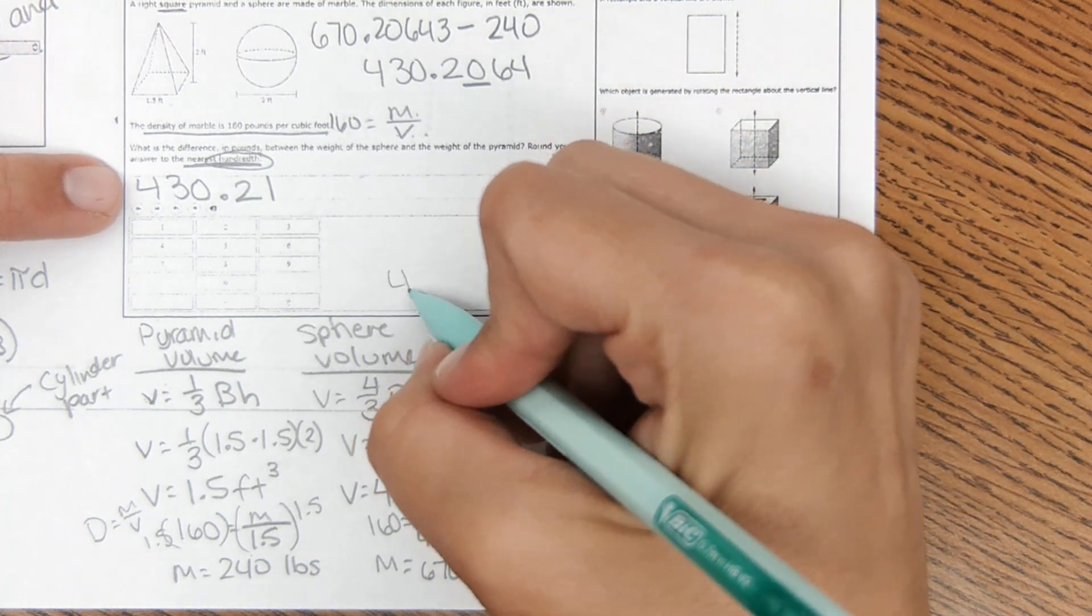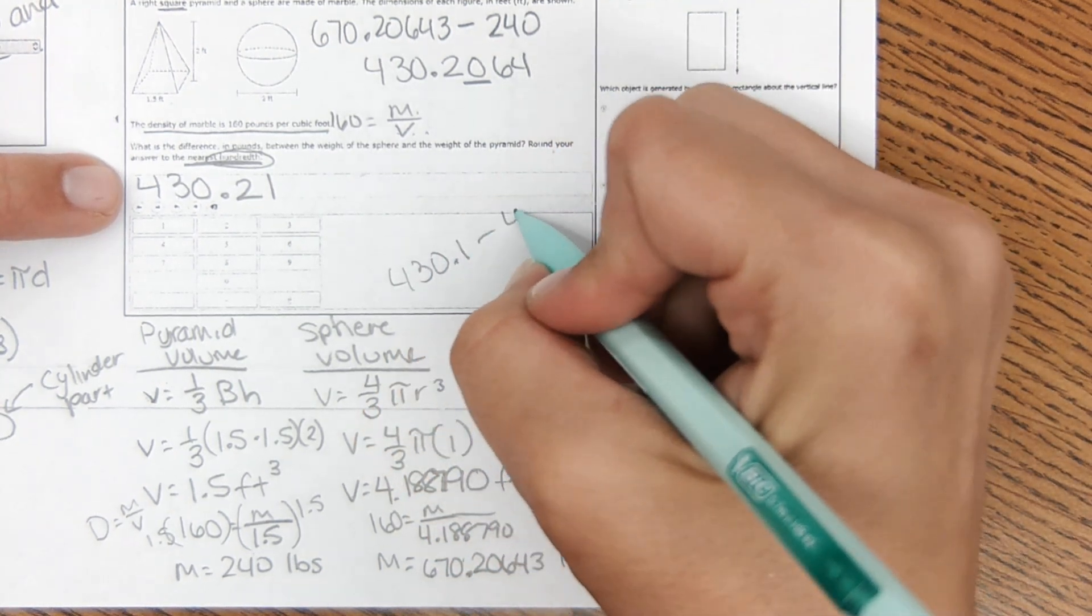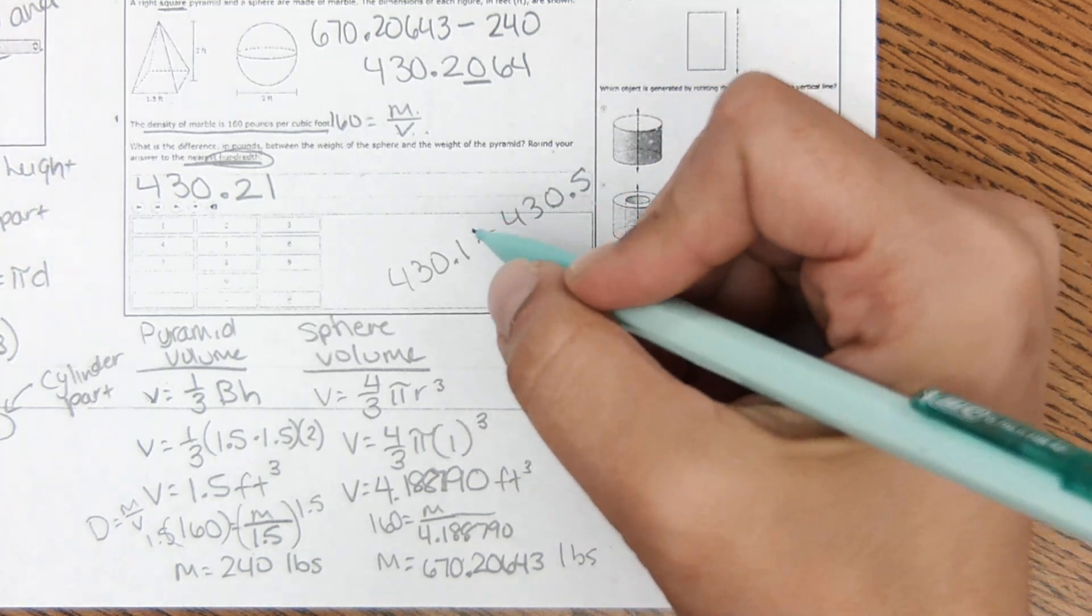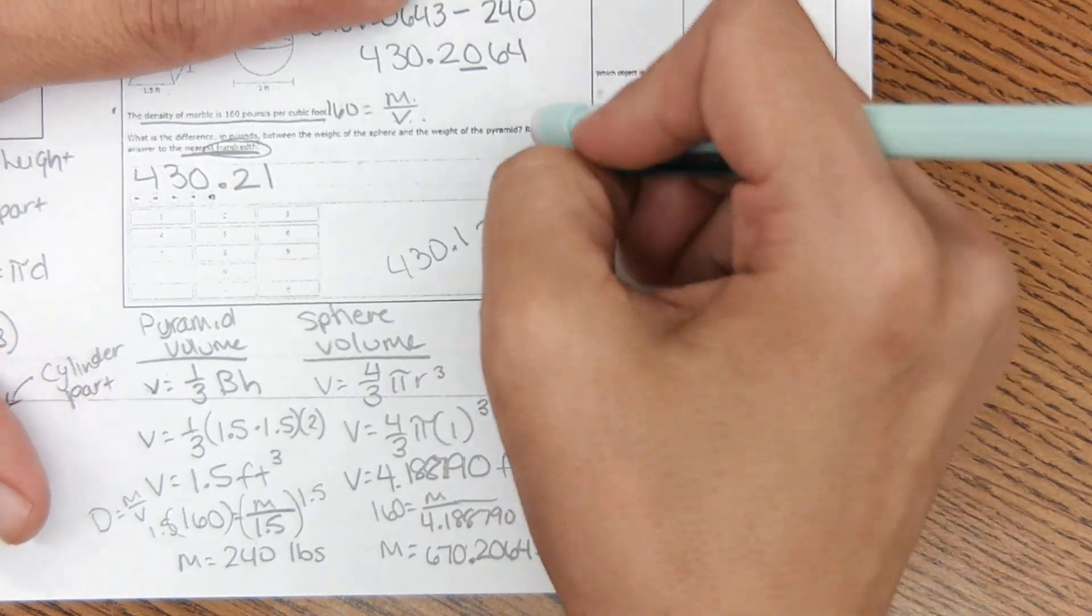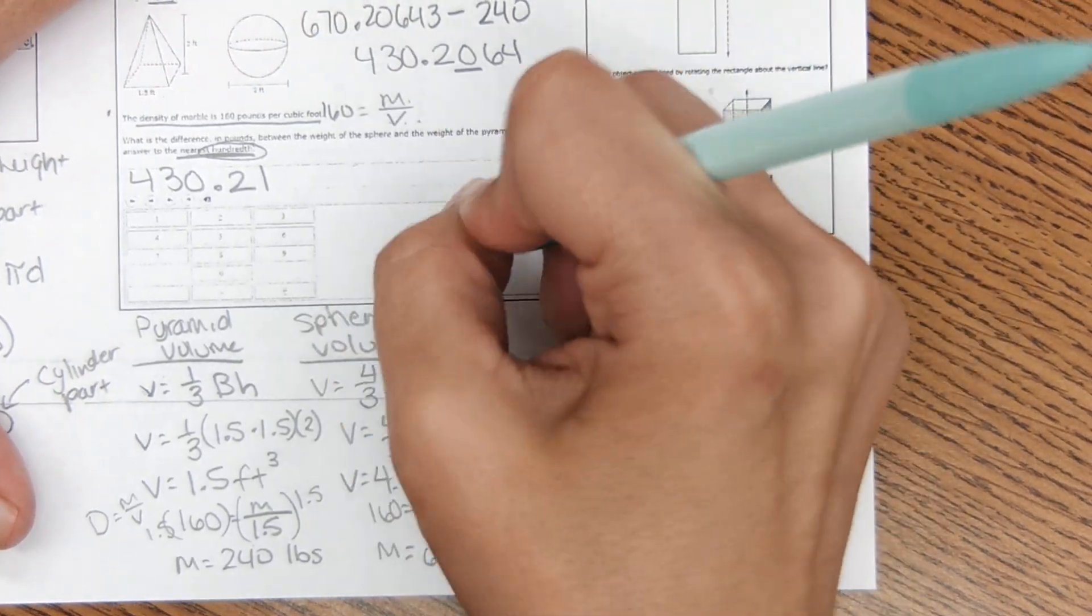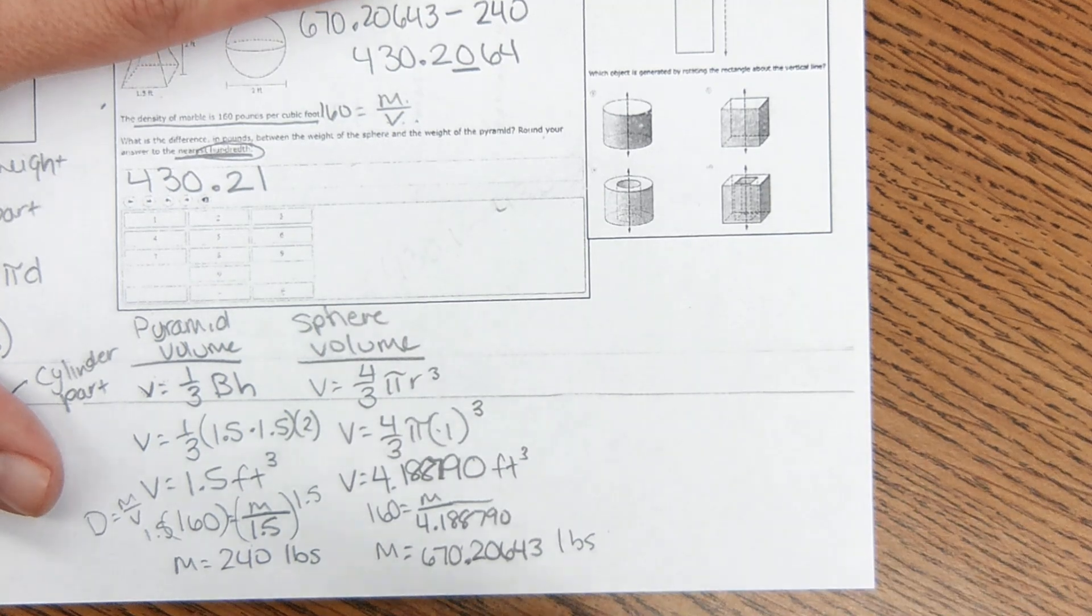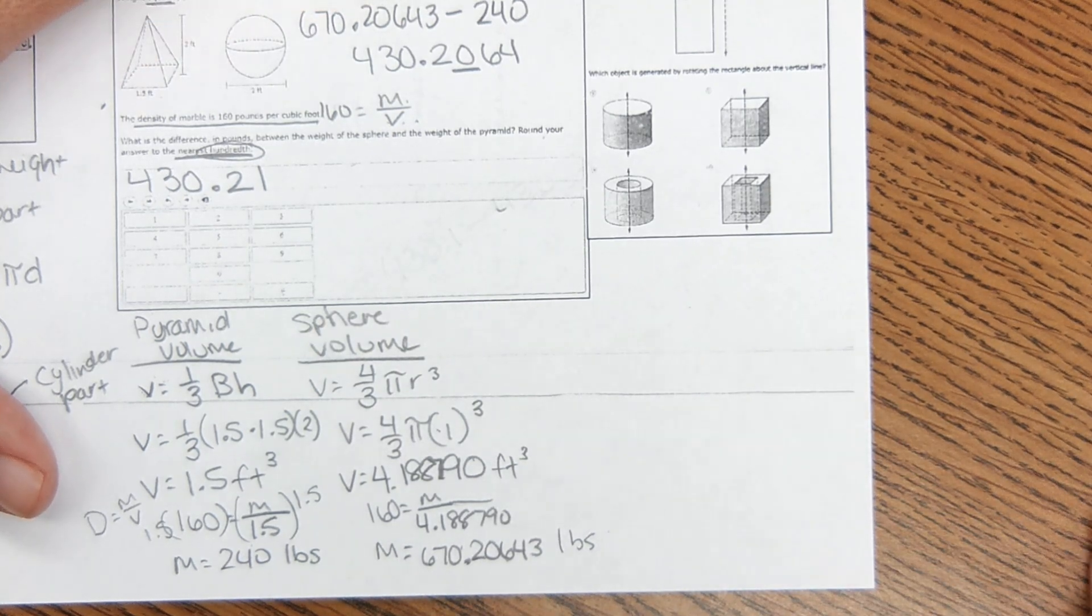anything from like 430.1 to 430.5 would be an accepted answer, and as long as you get it within that range, it'll accept your answer. So it's nice that they count that different people round differently, or if you use 3.14, it should still accept the answer. I know that one is a bit of a jump, the next one's easy.